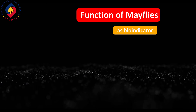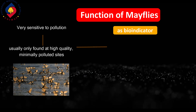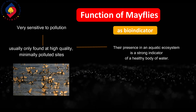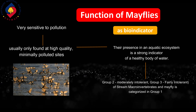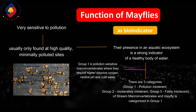Regarding the function of mayflies as bioindicators: mayflies are very sensitive to pollution and are usually only found at high quality, minimally polluted sites. Their presence in an aquatic ecosystem is a strong indicator of a healthy body of water. There are 3 categories of stream macroinvertebrates, and mayfly is categorized in Group 1 — pollution-sensitive macroinvertebrates that require high dissolved oxygen, neutral pH, and cold water.